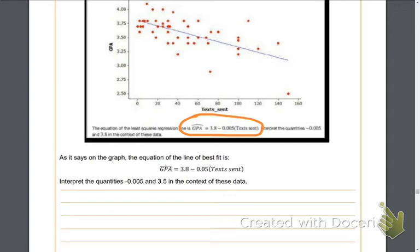All right, so as it says on the graph, the equation of the line of best fit is GPA, and then that notation over the GPA is read as hat. So I read this GPA hat equals 3.8 minus, and they actually got this wrong here. This should be 0.005 texts sent. And we want to interpret the quantities negative 0.005 and 3.5 in the context of these data.